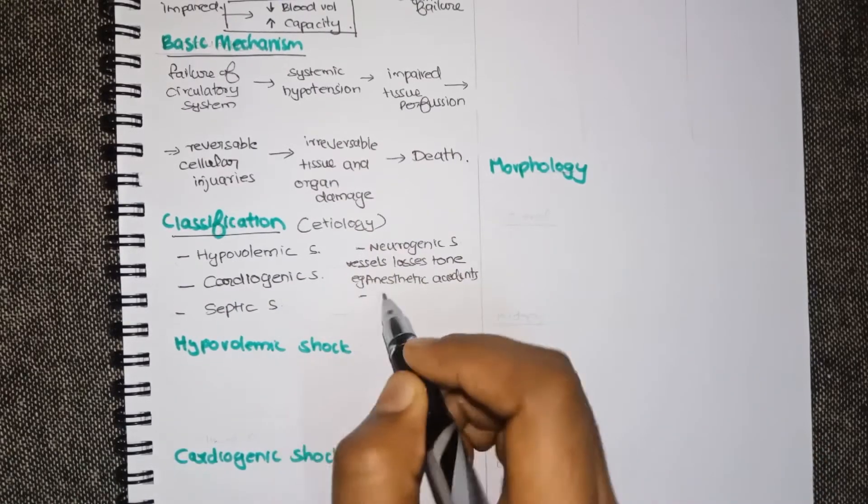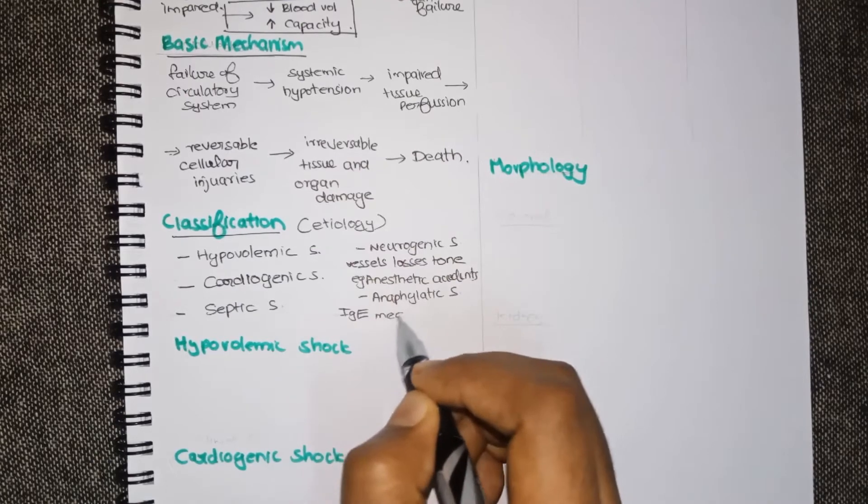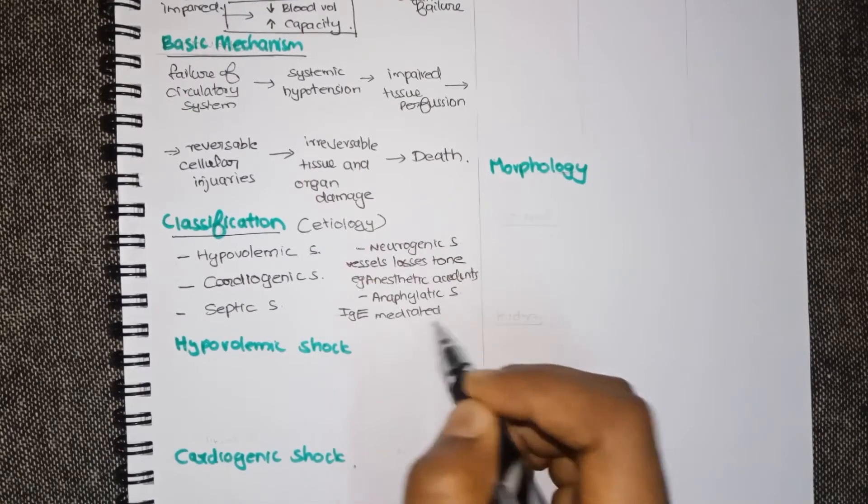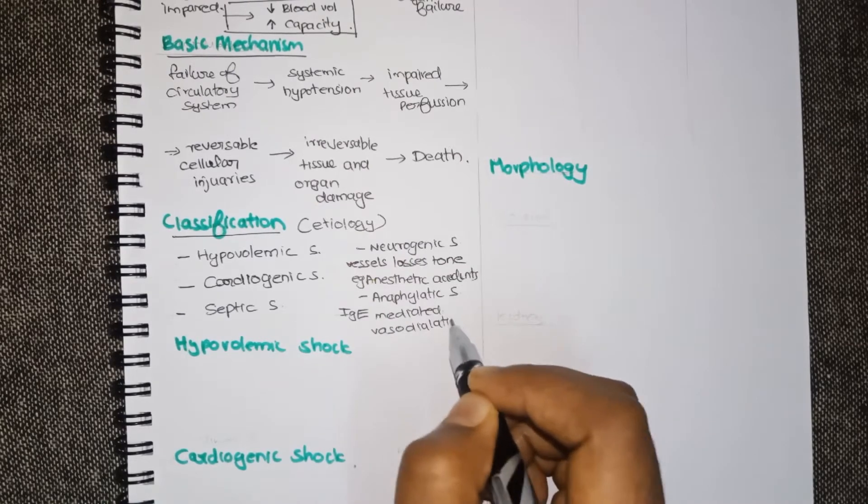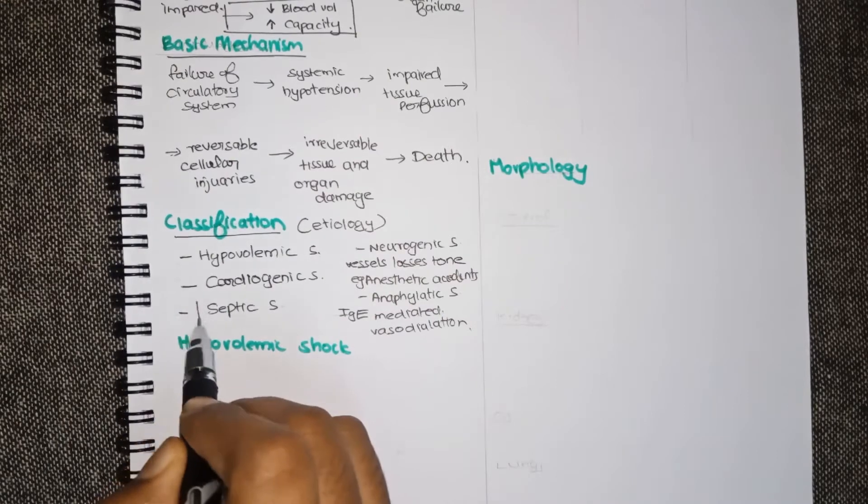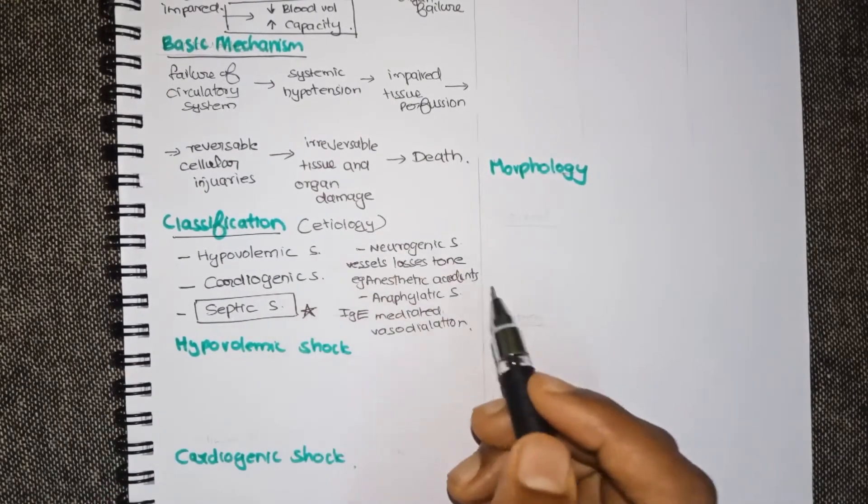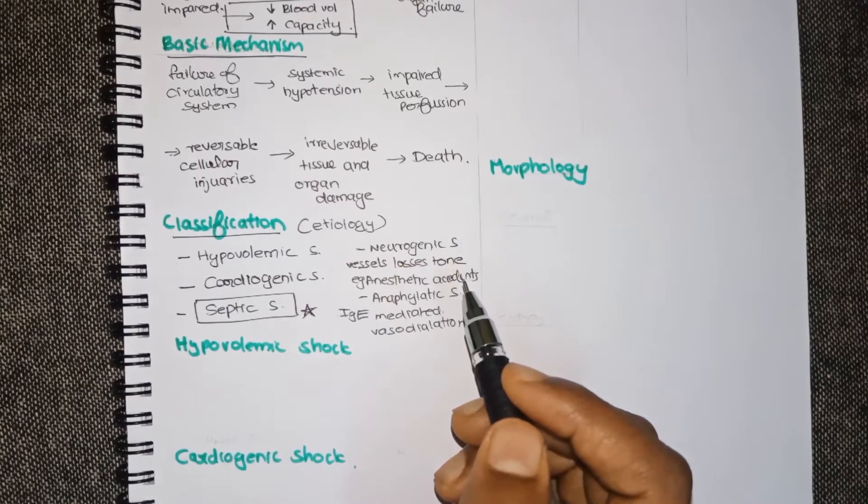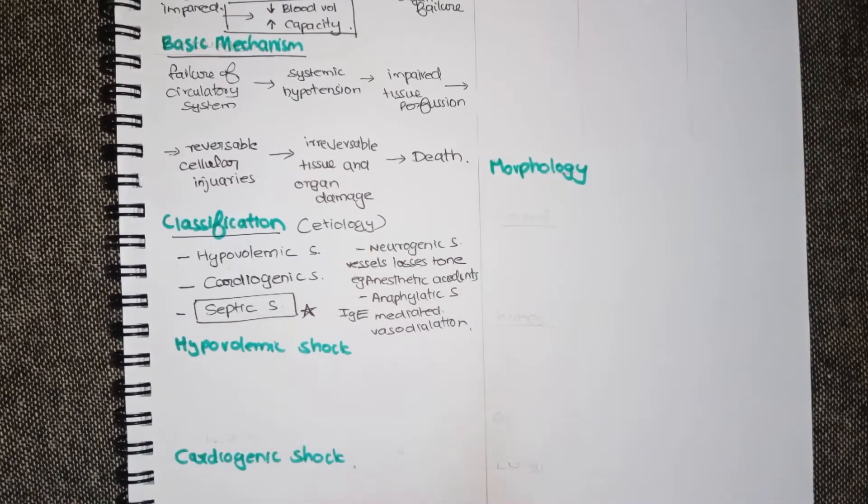Another type of shock is anaphylactic shock. It is due to IgE mediated allergy. Here vasodilation causes apparent increase in capacity. Now academically the septic shock is the most important shock and we must learn it. I will be discussing it in the next video. For now let us look at the hypovolemic and cardiogenic shock.